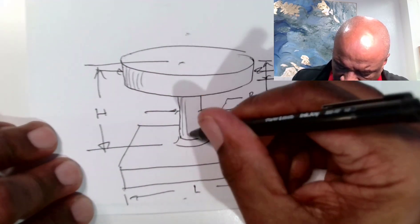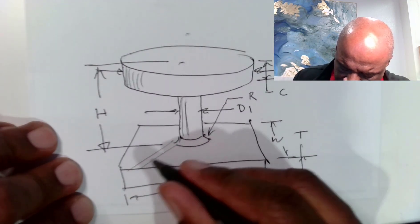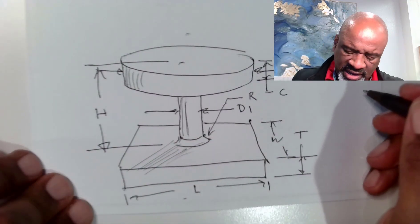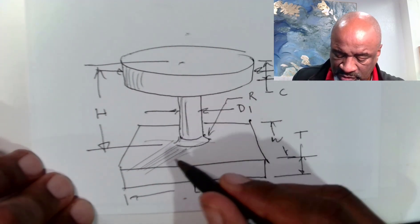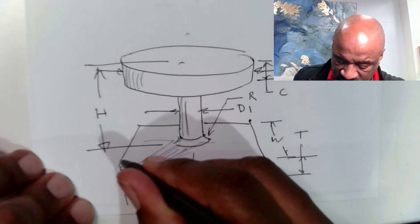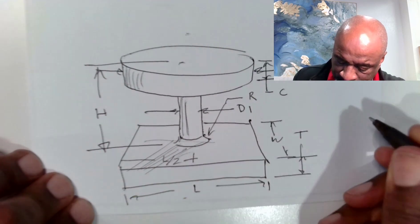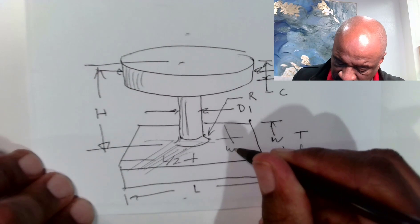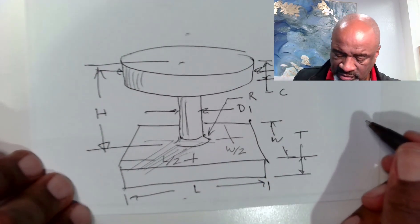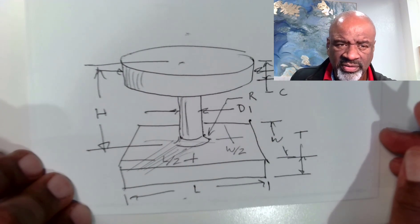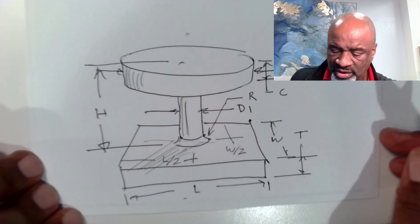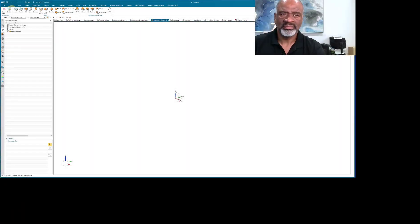Finally we have the variable R. That is what makes up this model. The revolved section happens right in the middle at L over 2 and W over 2 — that's kind of obvious. So those are all of our dimensions: L, T, W, D1, D2, H, C, and R.